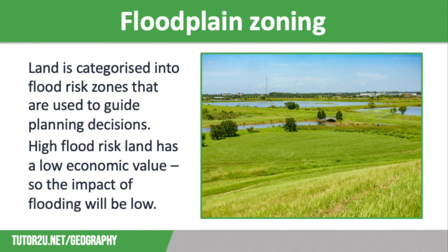The first strategy is flood plain zoning. This is where land is used to minimise flooding impact by categorising land into flood risk zones and issuing flood risk maps, which are then used to guide planning decisions regarding new development applications. For example, land closer to the river might be used for amenity land such as playing fields, whereas land further away would be used for more permanent structures such as housing developments.